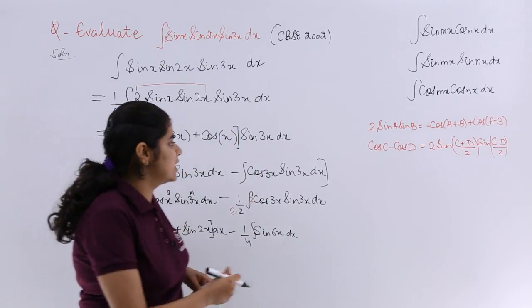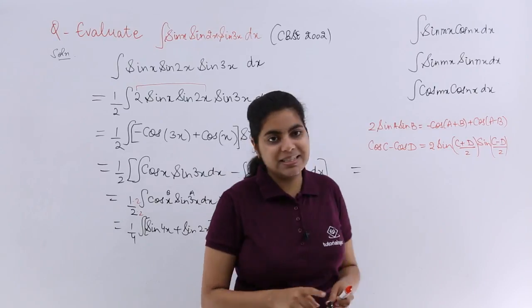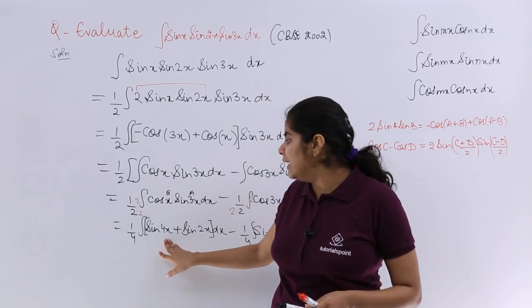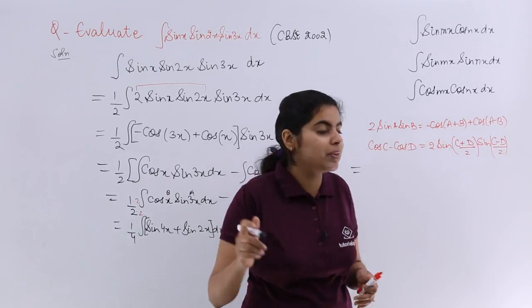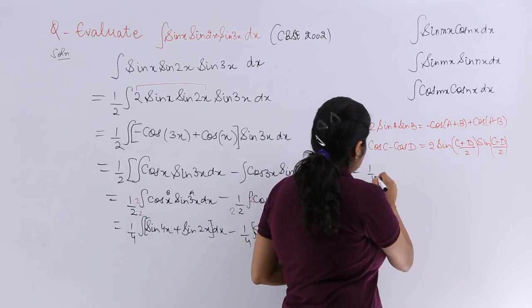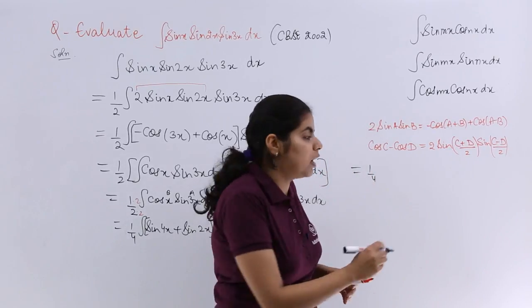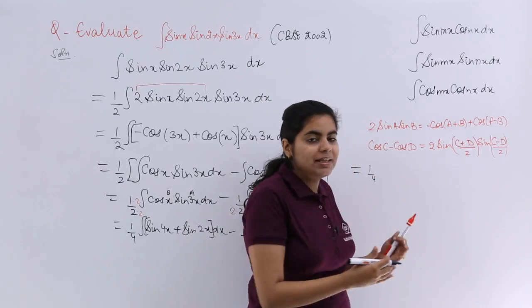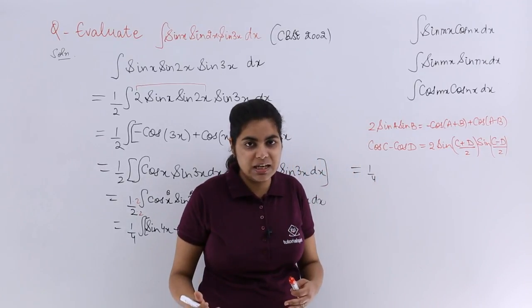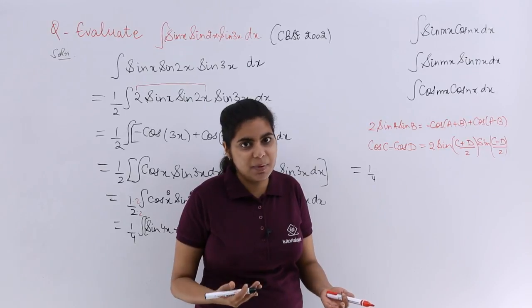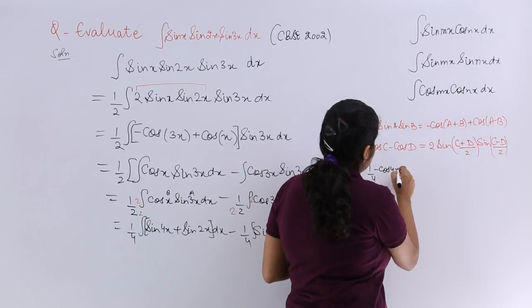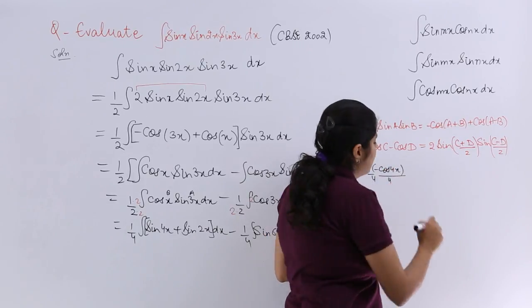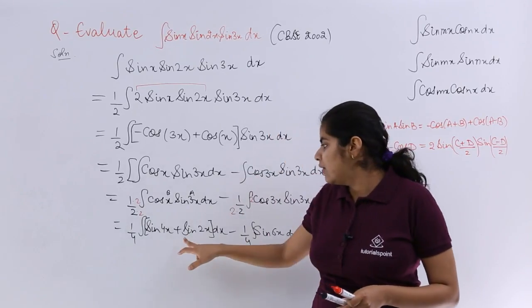So it is nothing but 1 by 4 integral of sin 4x with respect to x, that is dx. So sin theta integration is what? See, cos theta differentiation is minus sin theta. So sin theta integration is minus cos theta. So minus cos 4x and divided by 4 because of the angle also.